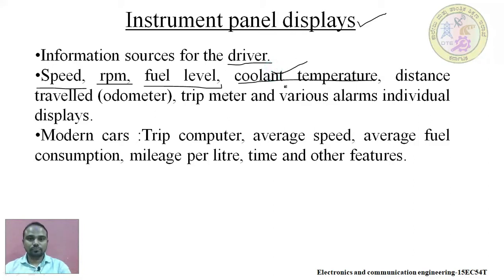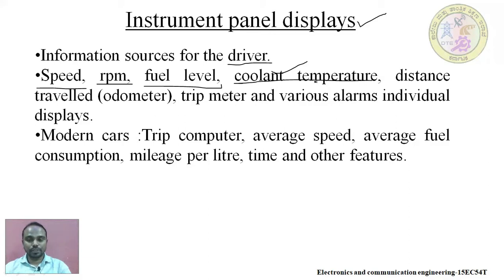The next parameter shown on the instrument panel display is coolant temperature. In an automobile vehicle, various liquids are used — water in the radiator, fuel in the fuel tank, and coolant, which is green in color and helps maintain the temperature of the engine along with the radiator. A coolant temperature sensor is used and the same temperature is shown on the instrument panel display.